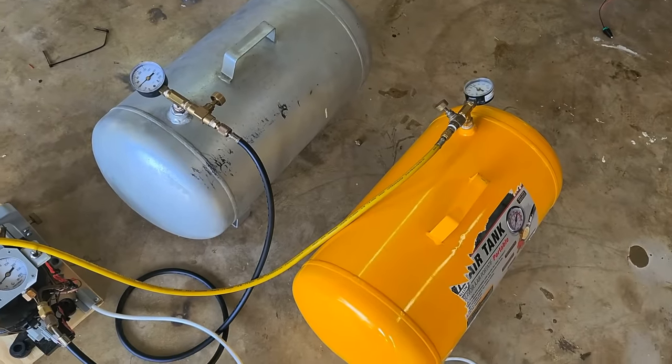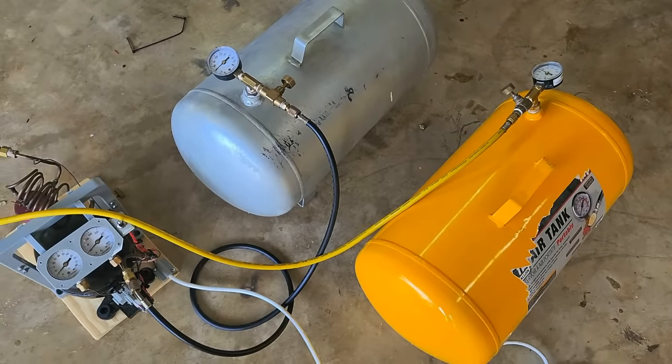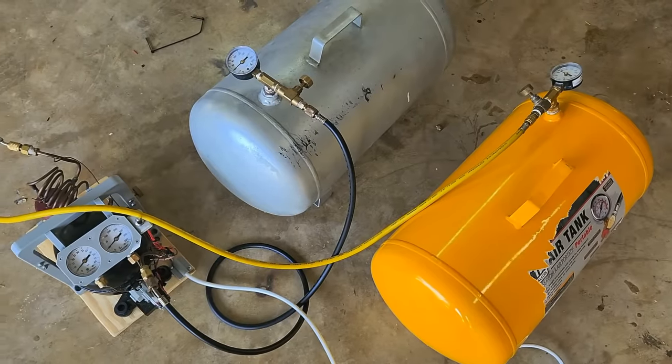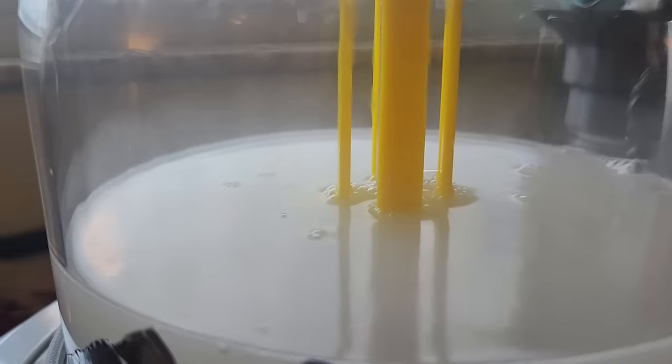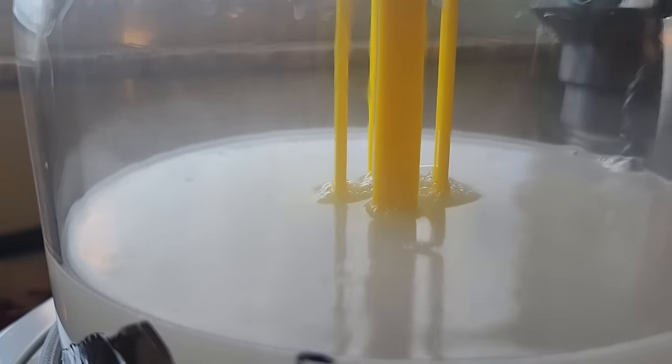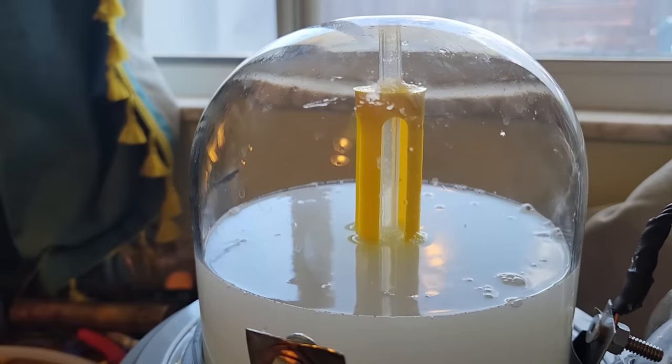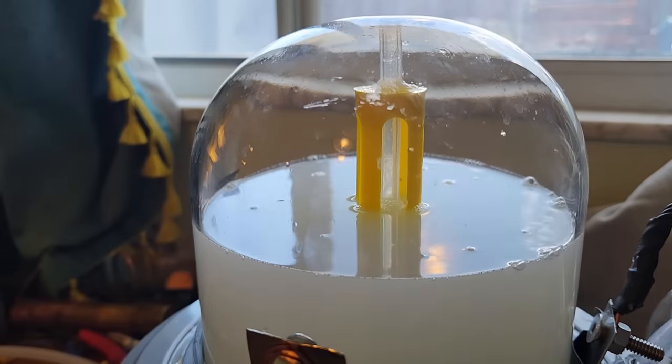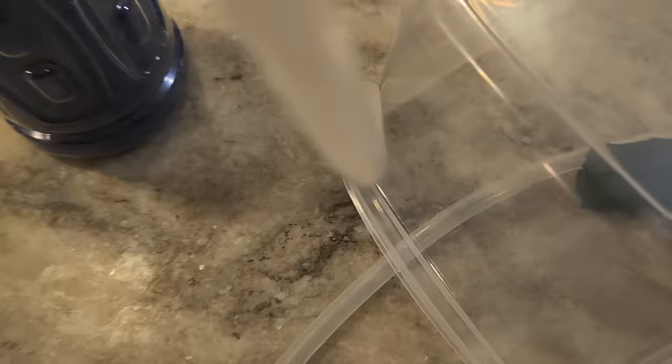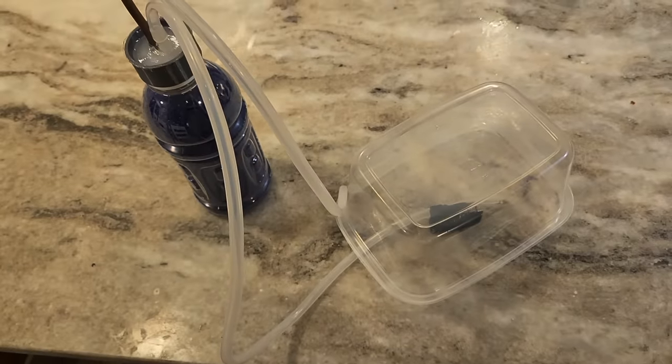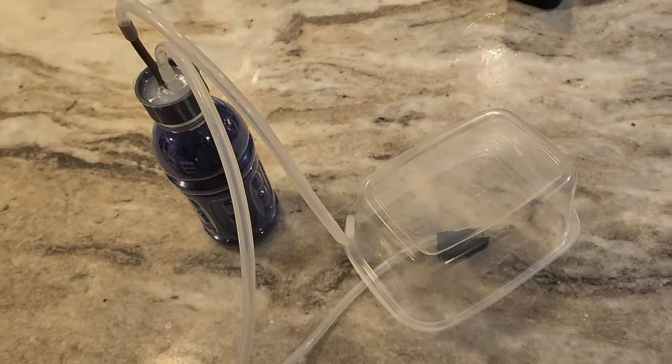Supposedly another thing that exacerbates the hydrogen embrittlement problem is the presence of moisture. That's a problem because the gas coming out of the cell is extremely humid because, you know, it's literally coming out of water. So I'm going to add this bottle full of silica gel in line with my pump output to dry the hydrogen.